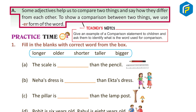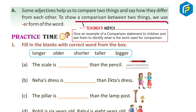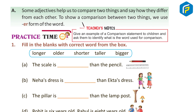To show a comparison between two things, we use the ER form of the word. Teacher's Note: Give an example of a comparison statement to children and ask them to identify what is the word used for comparison.